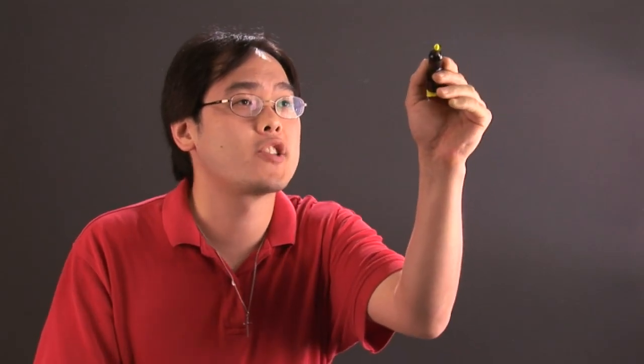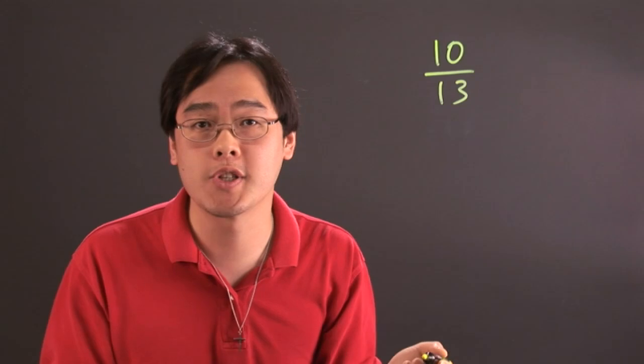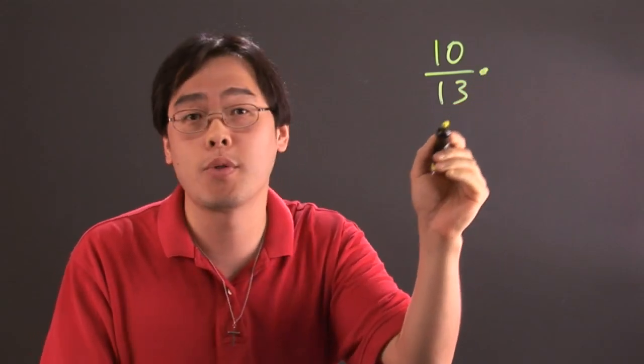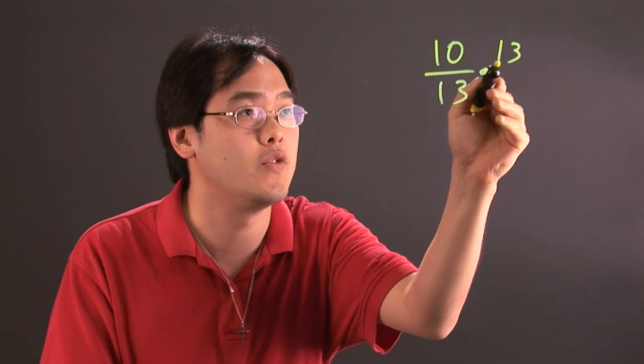Suppose you have a fraction, let's just say 10/13. Now when you multiply by its reciprocal, as you know with the reciprocal you have to flip the fraction, so the reciprocal of 10/13 is 13 over 10.